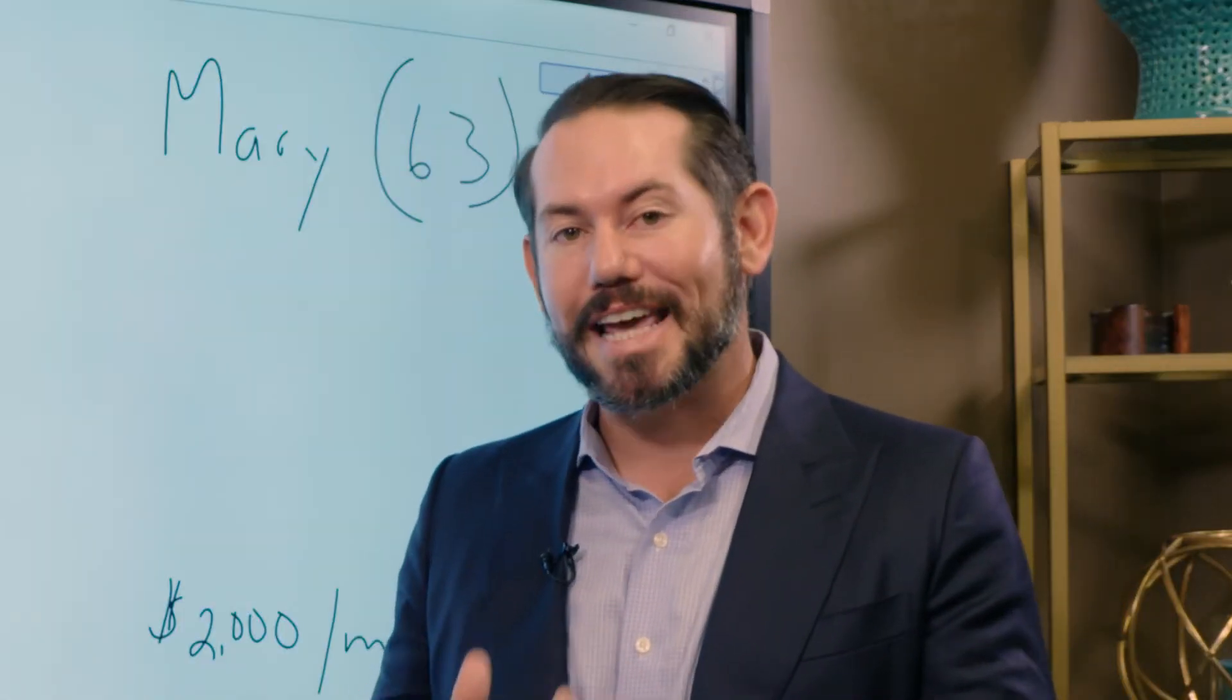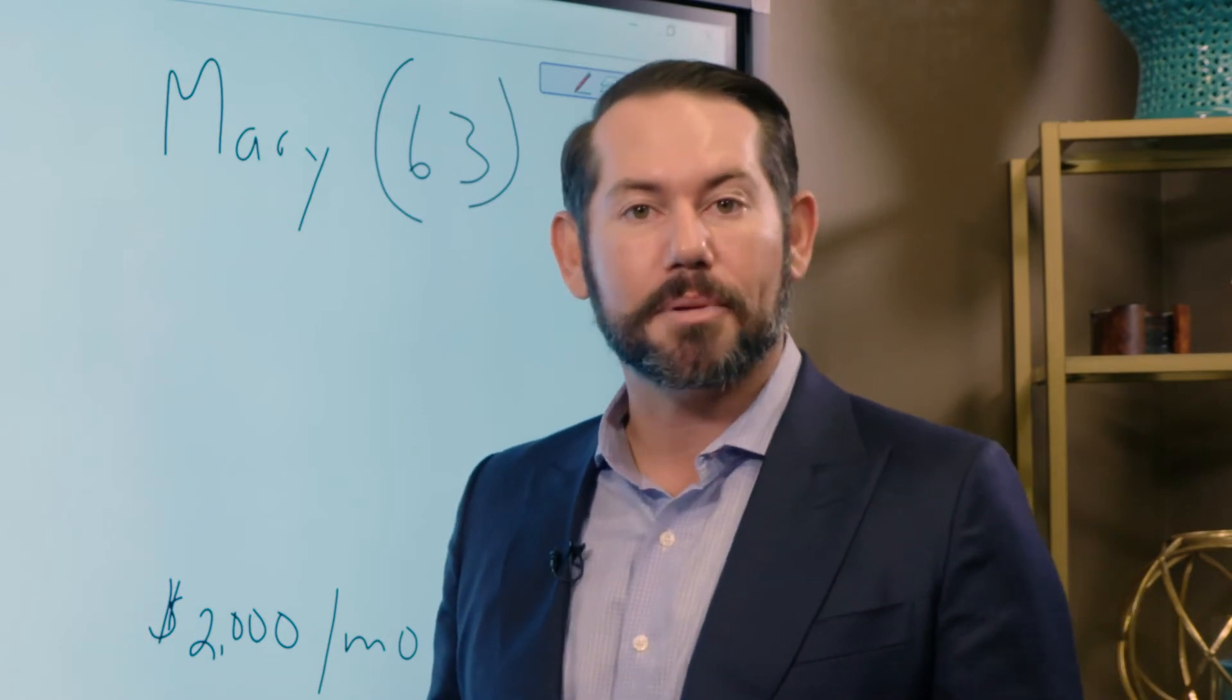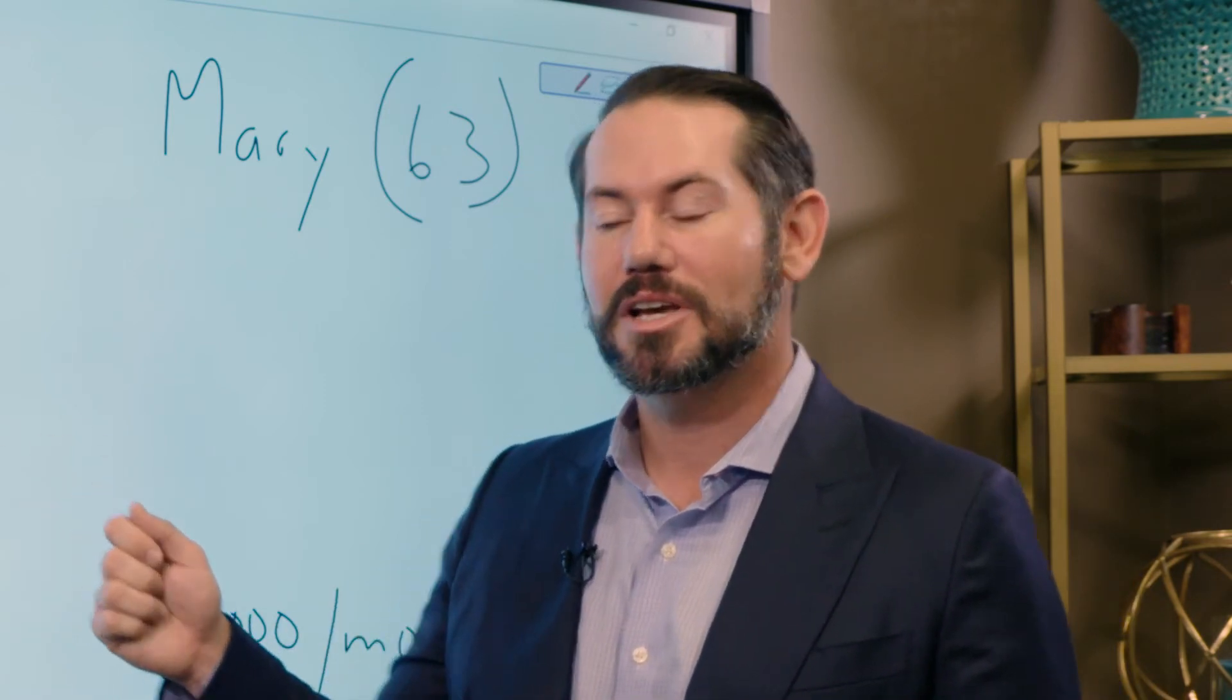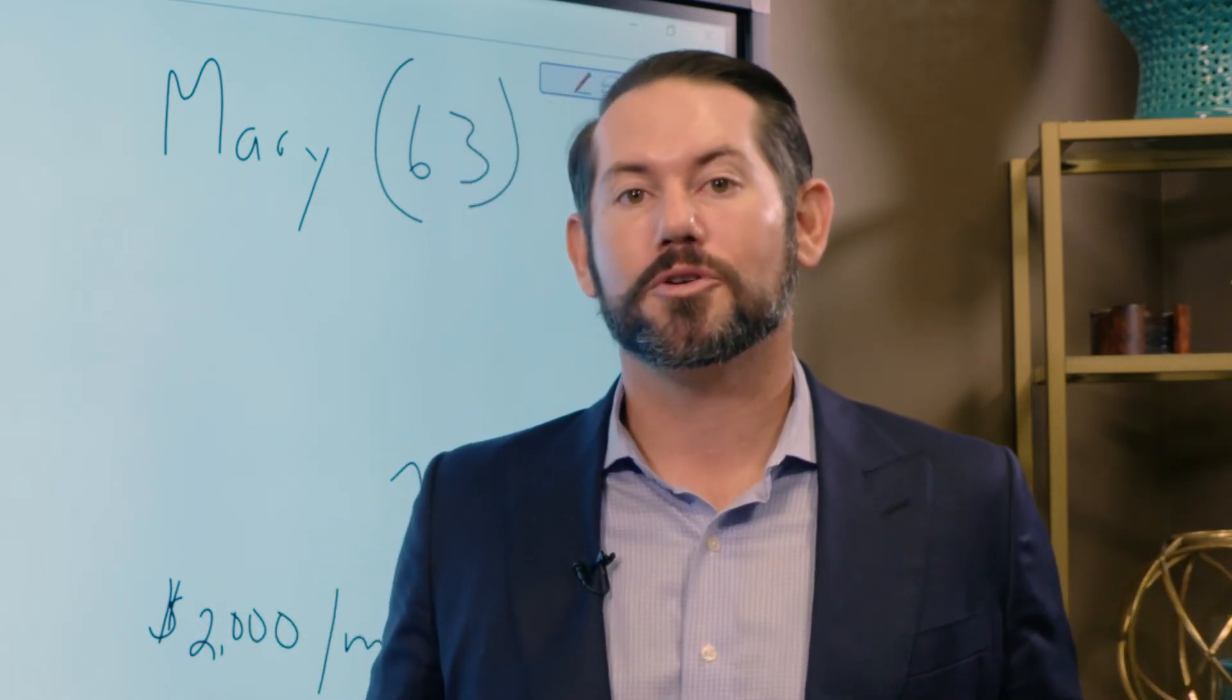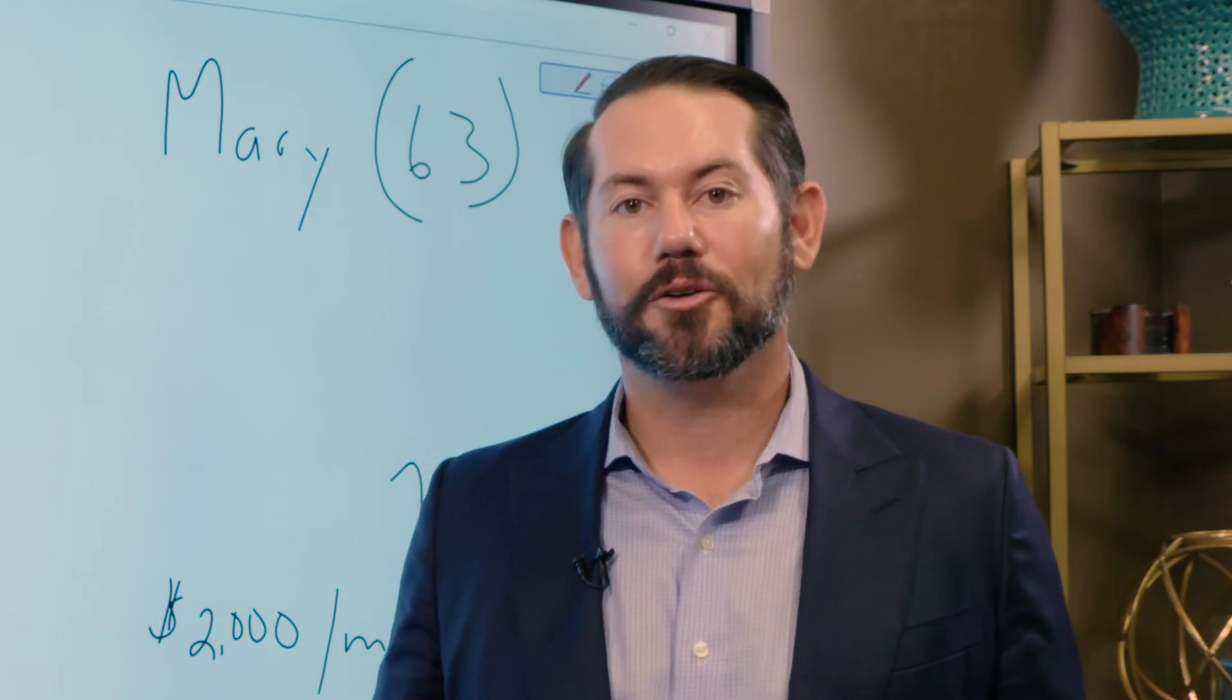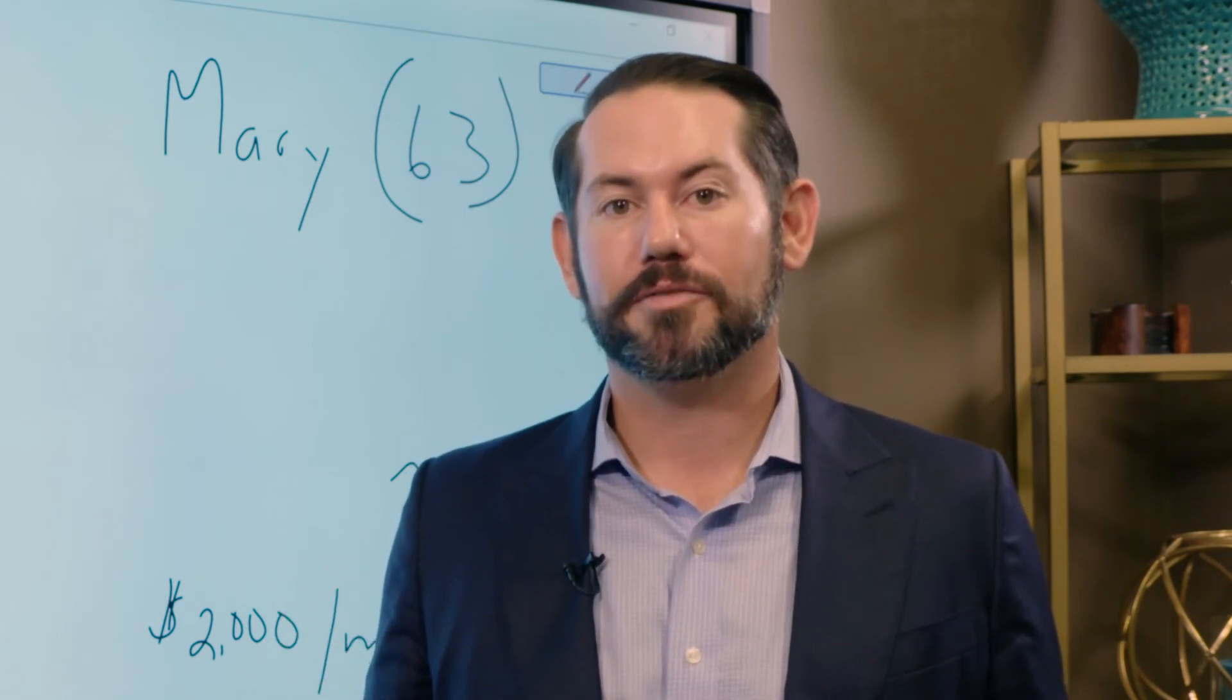So very, very important date there. If you're born before it, you are eligible for a restricted application to get half of your spouse's without impacting your Social Security benefit. But if you were born on or after it, then you are no longer eligible for the restricted application. If you file, you will have been deemed to have filed for any and all available benefits to you.